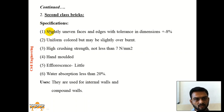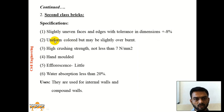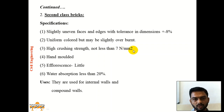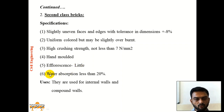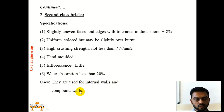2nd-class bricks have slightly uneven faces and edges with tolerance in dimensions of ±8%, and are uniform in color but may be slightly overburnt. Crushing strength should be not less than 7 N/m². They may be hand molded, efflorescence may be slight, and water absorption should be less than 20%. They are used for internal walls and compound walls.